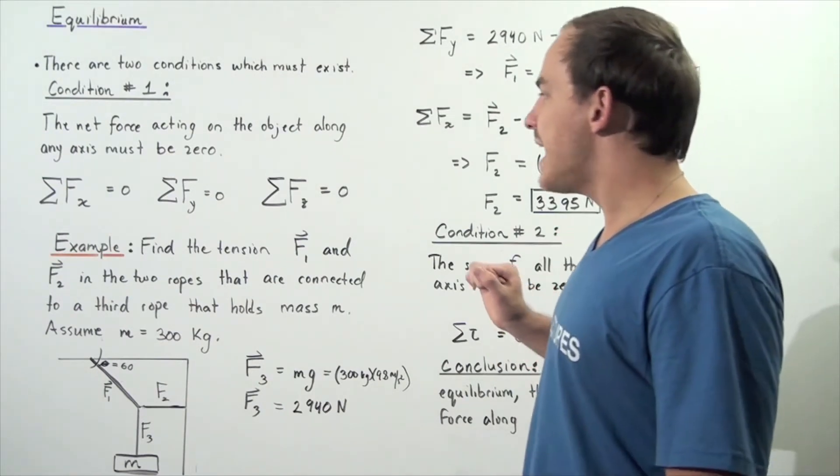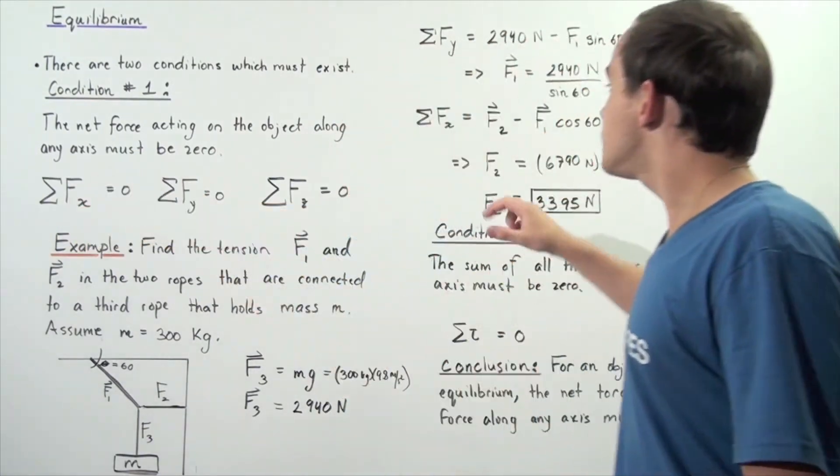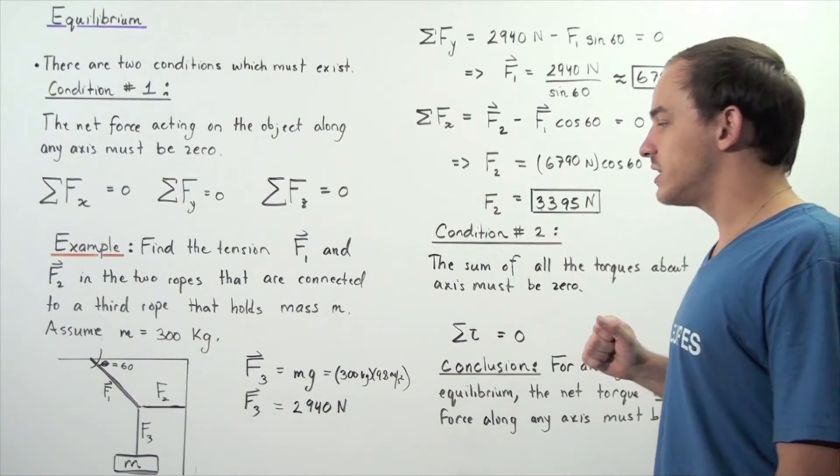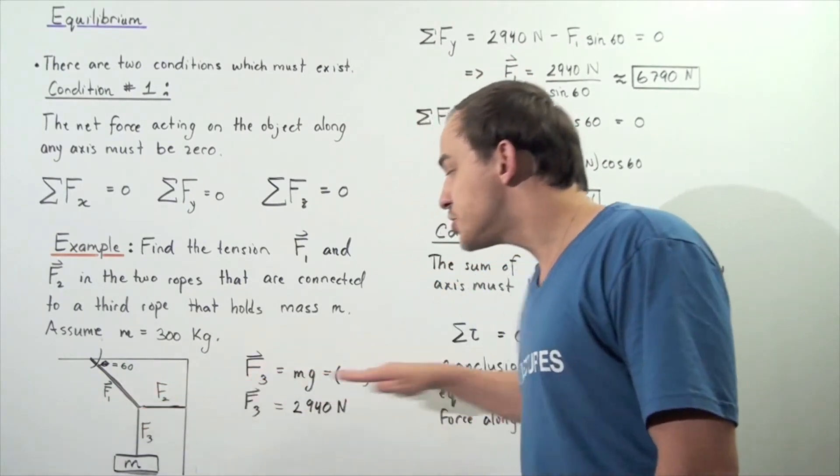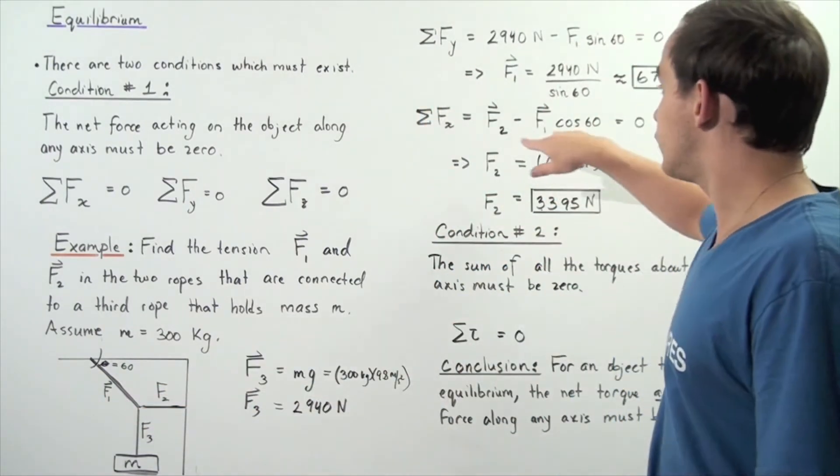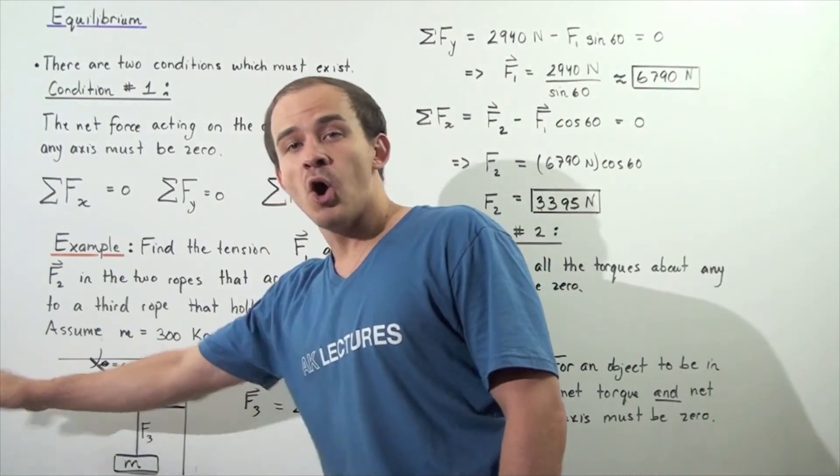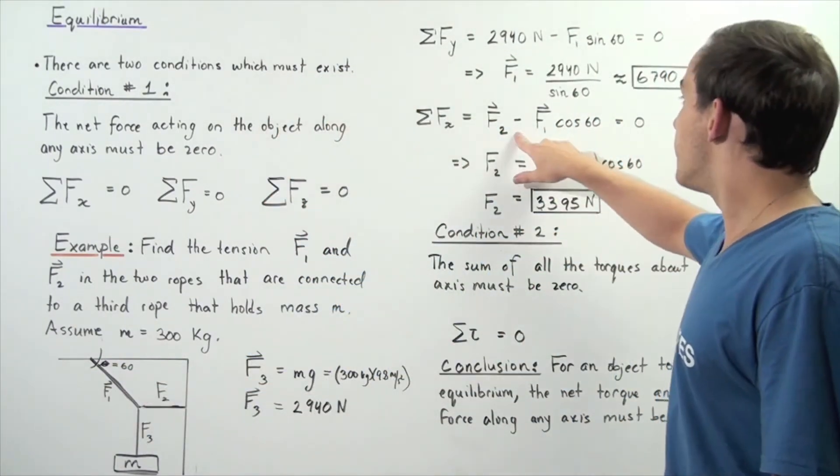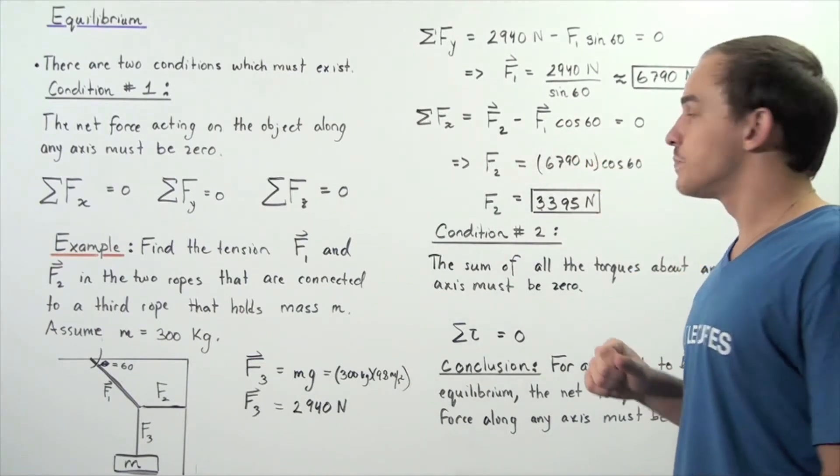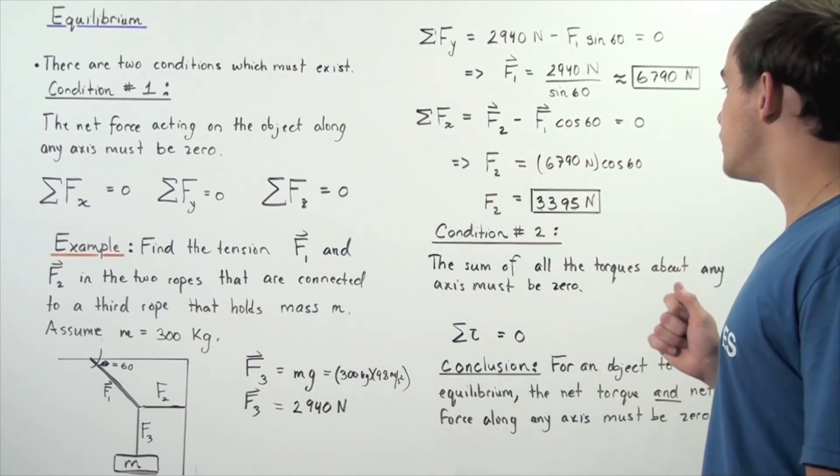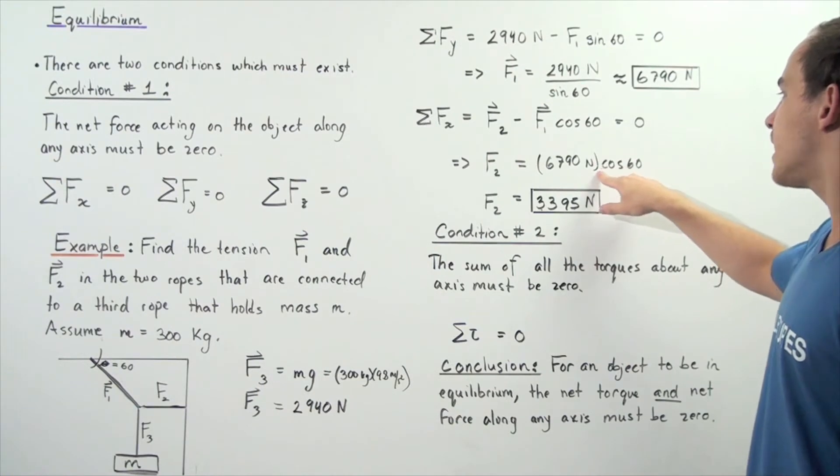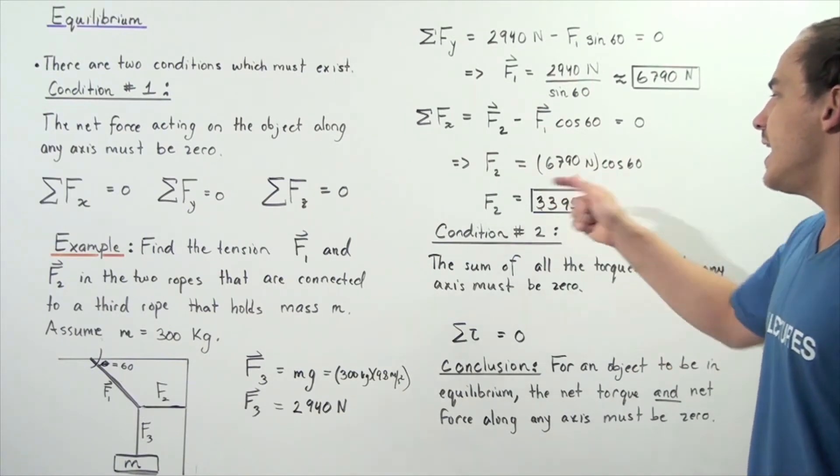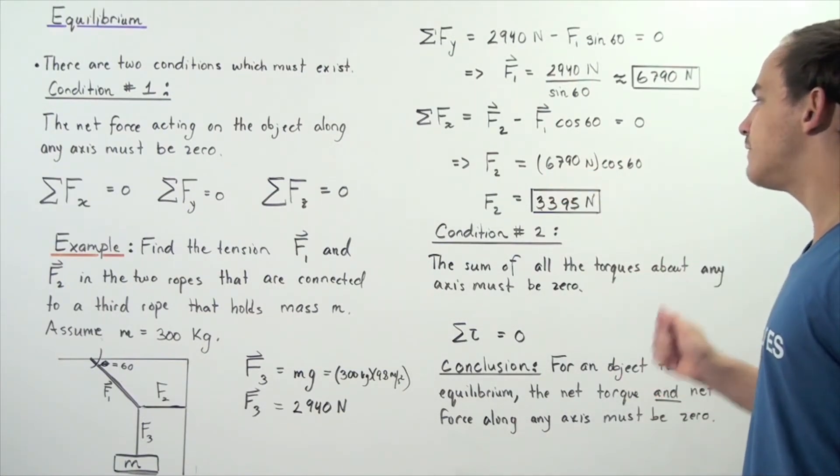Now the same exact step should be taken with this equation. So the sum of all the forces acting on the object along the x-axis is equal to zero. So we have one force, we choose this way positive, so F2 is positive. We have F2 minus the x component of the F1 force, which is minus F1 cosine of the angle 60. So we solve for F2 and we see that F2 is equal to the product of this quantity and cosine of the angle 60. So cosine of the angle 60 is simply 0.5, so 0.5 multiplied by 6,790 is 3,395 newtons.